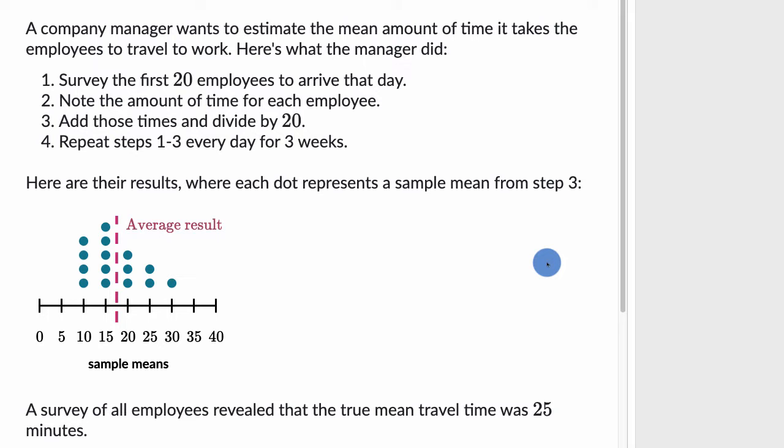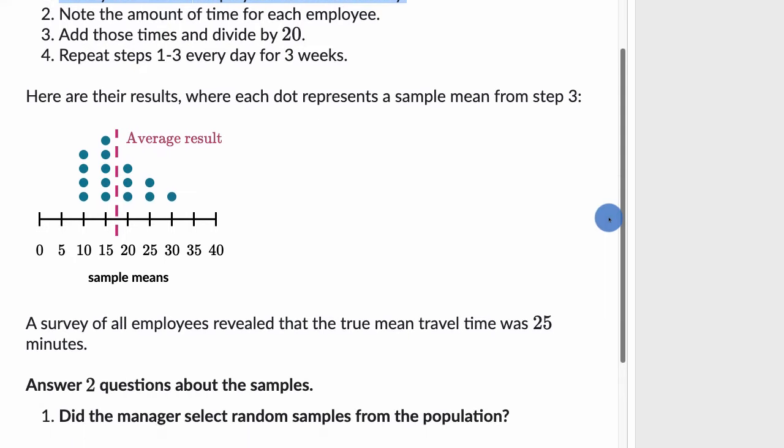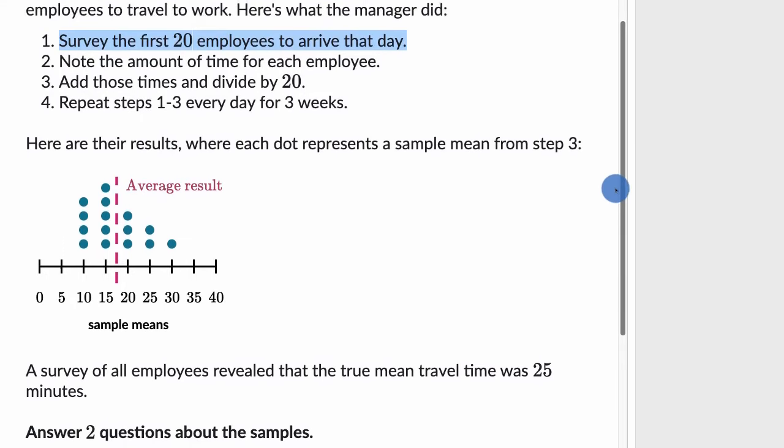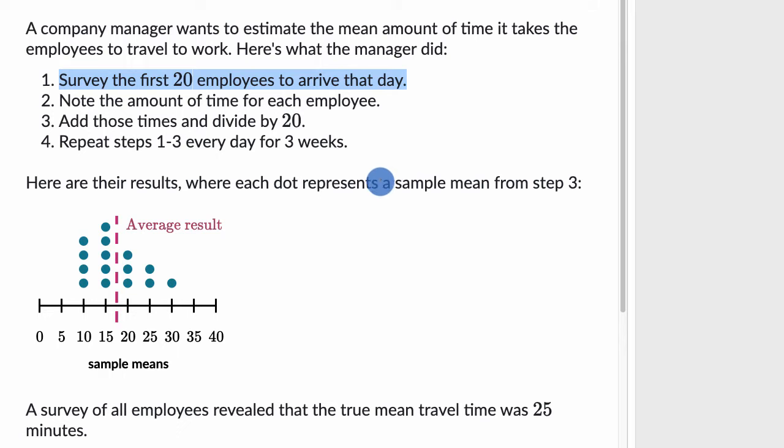All right. So when the manager decided to sample, every day they surveyed the first 20 employees to arrive that day. So that is not really a random representative sample of the population, especially if you're thinking about time to travel to work.